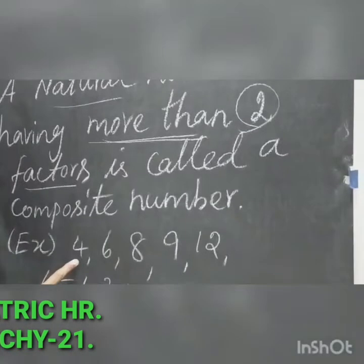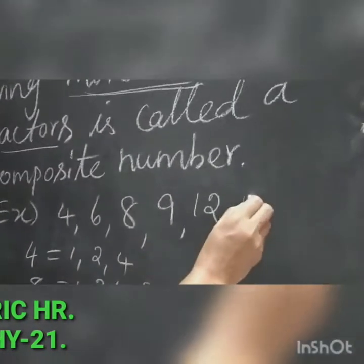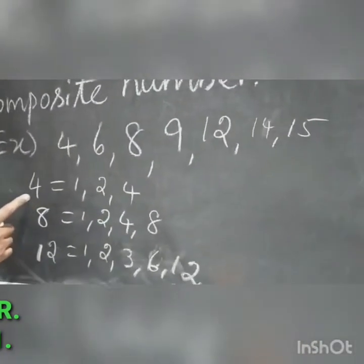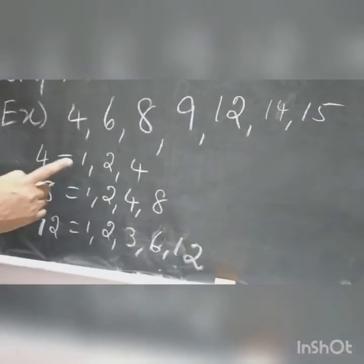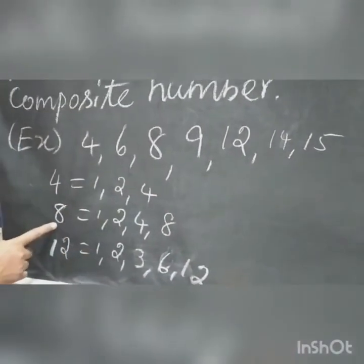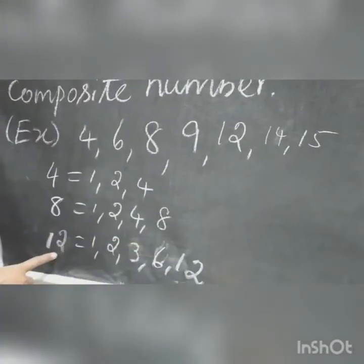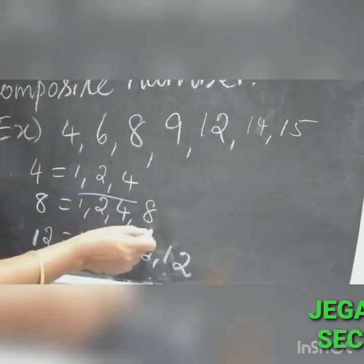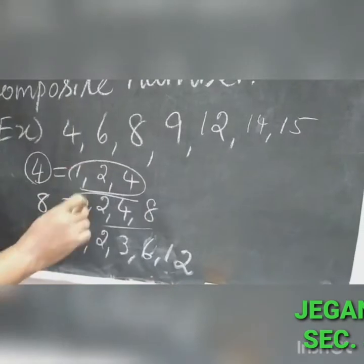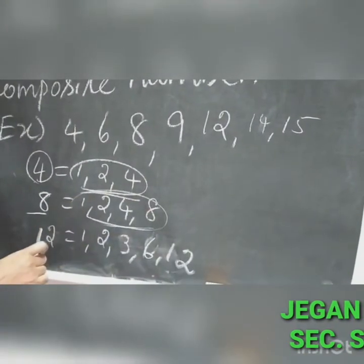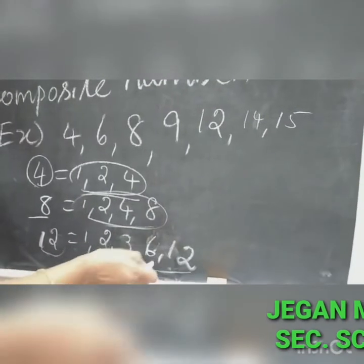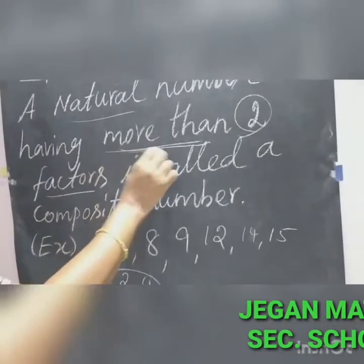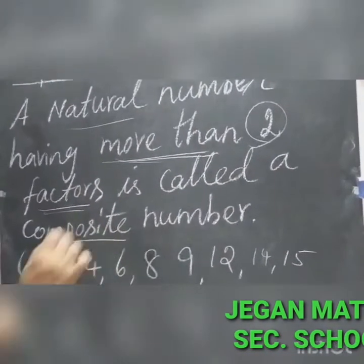Examples of composite numbers: 4, 6, 8, 9, 12, 14, 15, and so on. The factors of 4 are 1, 2, and 4 — that is 3 factors. The factors of 8 are 1, 2, 4, and 8 — that is 4 factors. The factors of 12 are 1, 2, 3, 6, and 12 — that is 5 factors. Since all these have more than 2 factors, they are called composite numbers.